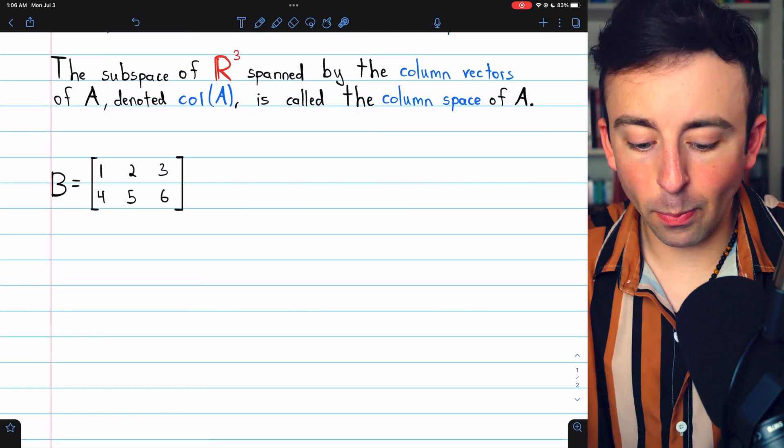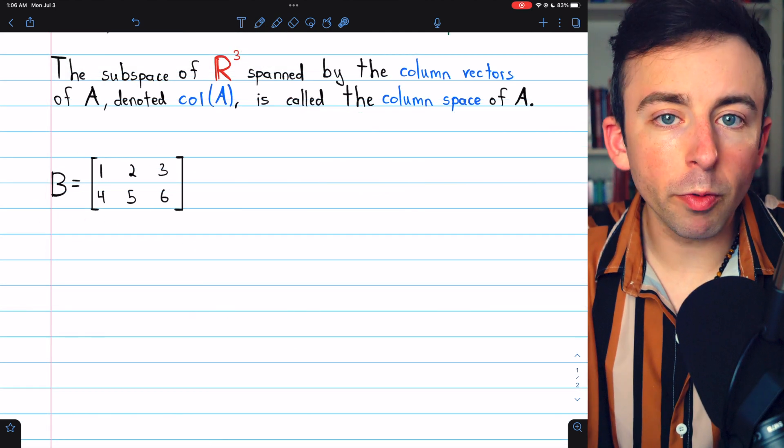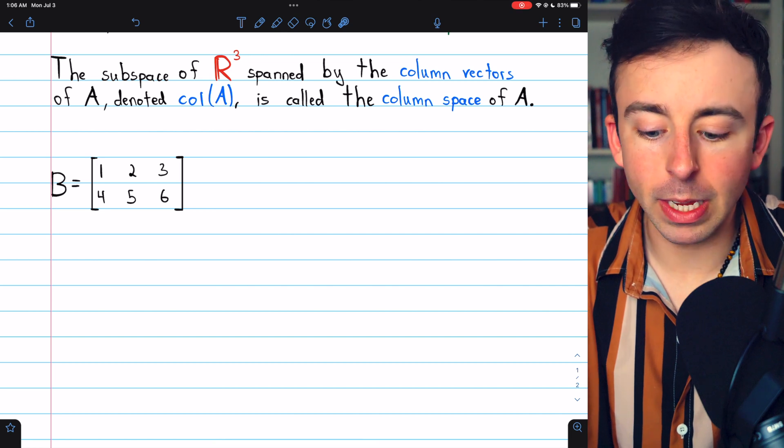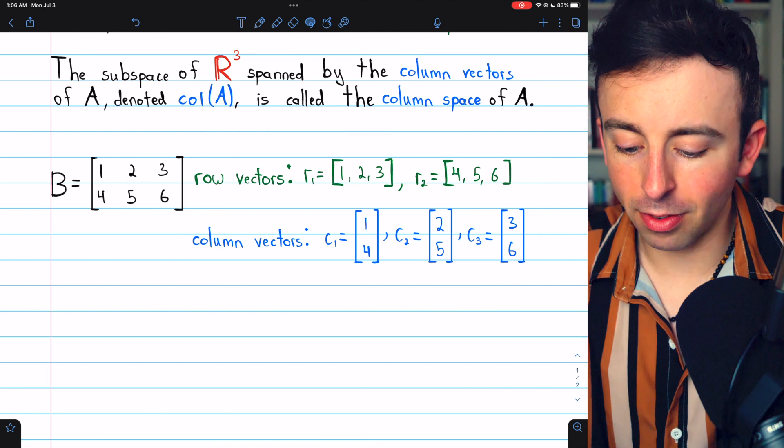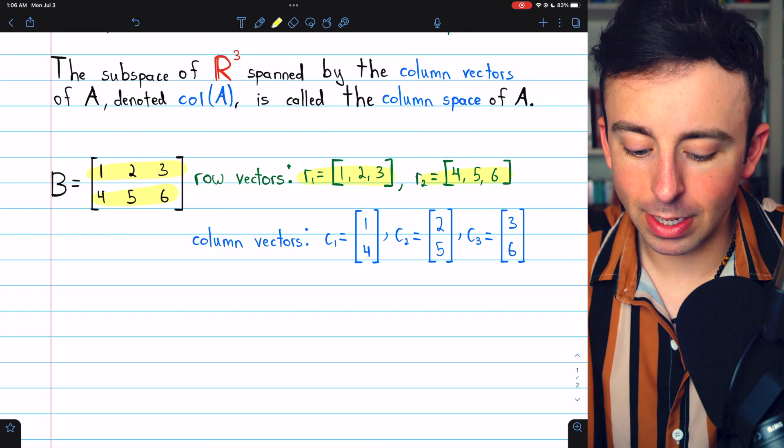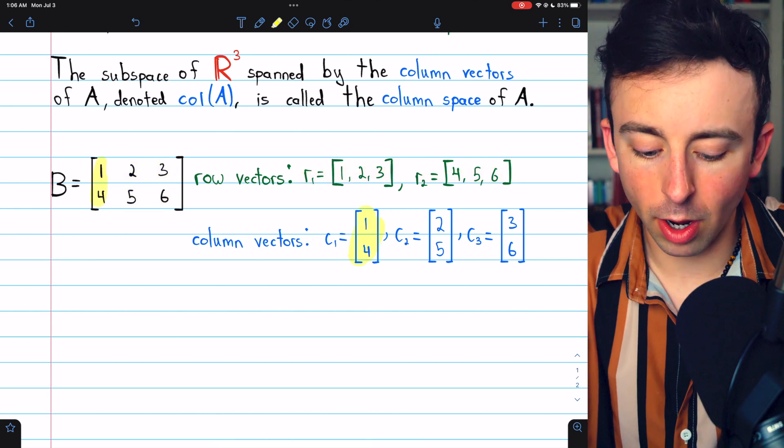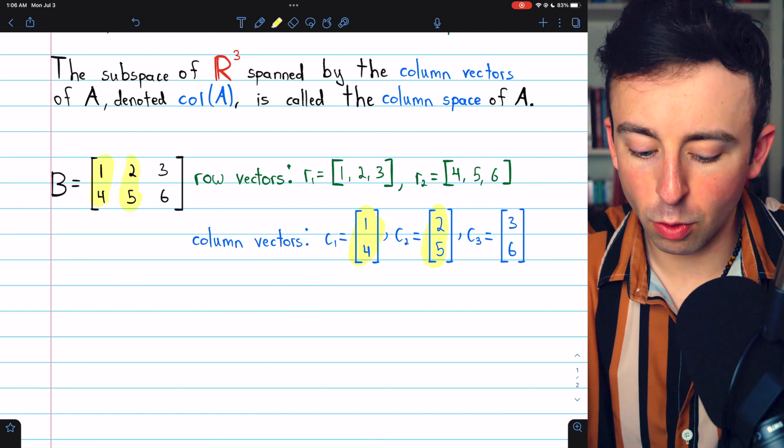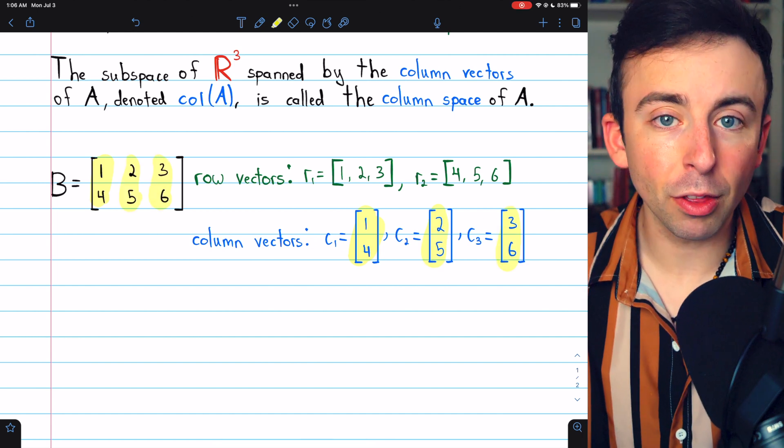For this lesson, let's do one more example. Here's a two by three matrix B. What are the row vectors and the column vectors of B? I'm going to paste the answers on screen now. There are the row vectors, R1 made from the first row, and R2 made from the second row. And then here are our column vectors, C1 made from column one, C2 from column two, and C3 the vector from column three.